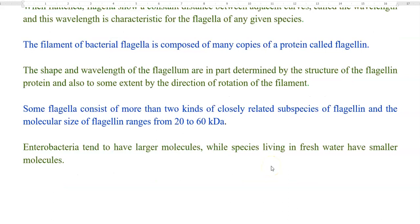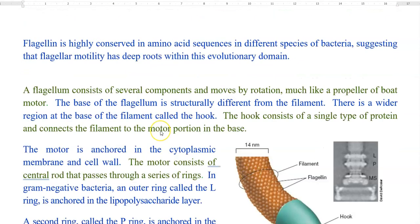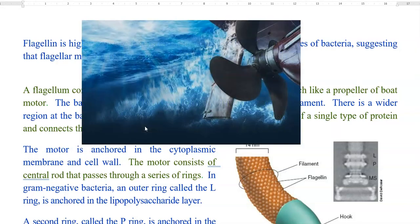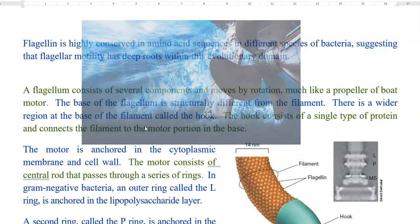The variation in the size of flagellin is also noticed between bacteria. For example, enteric bacteria tend to have large molecules of flagellin, whereas bacterial species that live in fresh water are found to have a smaller molecular size of flagellin proteins. Flagellin is highly conserved in amino acid sequences across different species of bacteria, suggesting that flagellar motility has deeper roots in the evolutionary domain of bacteria. A flagellum consists of several components and they move by rotation, much like a propeller of a boat motor propelling the movement of a boat.